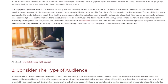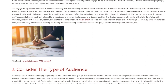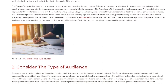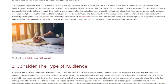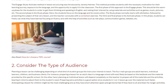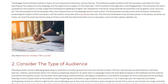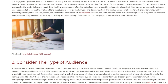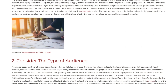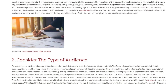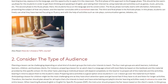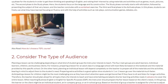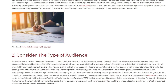The second step is to consider the type of audience. Planning a lesson can be challenging depending on what kind of student groups the instructor intends to teach. The four main groups are adult learners, individual learners, children, and business clients. For instance, preparing a lesson for an adult class in a language school will most likely be based on the textbook and the material provided by that specific school.